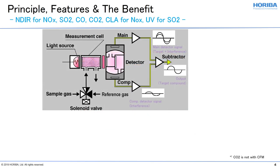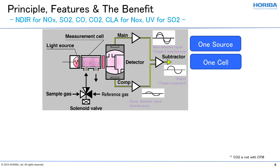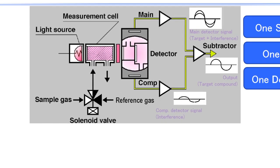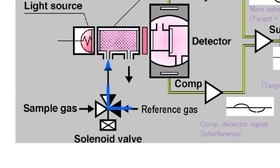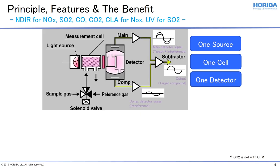Horiba's patented cross-flow modulation uses one light source, one cell, and one detector. A solenoid valve selects alternate sample flow and reference gas flow every half second, resulting in the flow path shown: reference gas, then sample gas, then reference gas. The detector reads reference gas as zero and then reads sample gas as span.